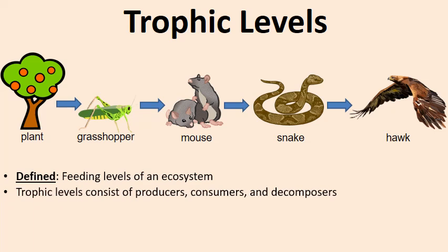In this food chain you can see a producer in the form of a tree and various consumers. Often in a food chain, decomposers are not diagrammed and illustrated — I'll talk about why that is in a little bit — but sometimes you might see them.